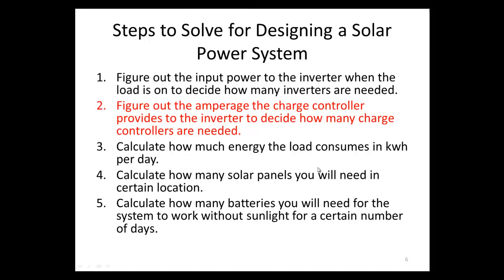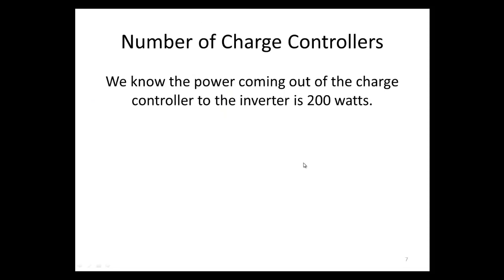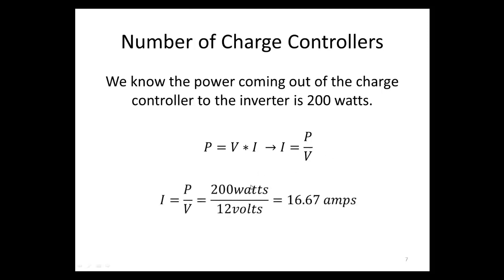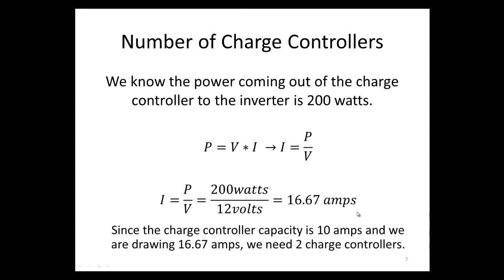Step 2: we want to figure out the amperage the charge controller provides to the inverter to decide how many charge controllers are needed. The power coming out of the charge controller to the inverter is 200 watts. Using power equals voltage times amperage, we rearrange to get amperage equals power over voltage: 200 watts divided by 12 volts equals 16.67 amps. Since our rating is 10 amps and we're drawing 16.67 amps, we need two charge controllers, giving us a combined rating of 20 amps.